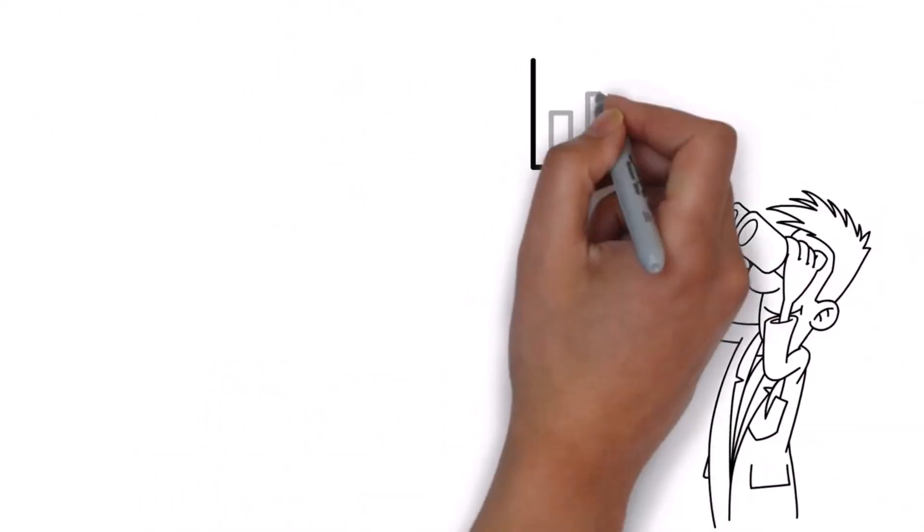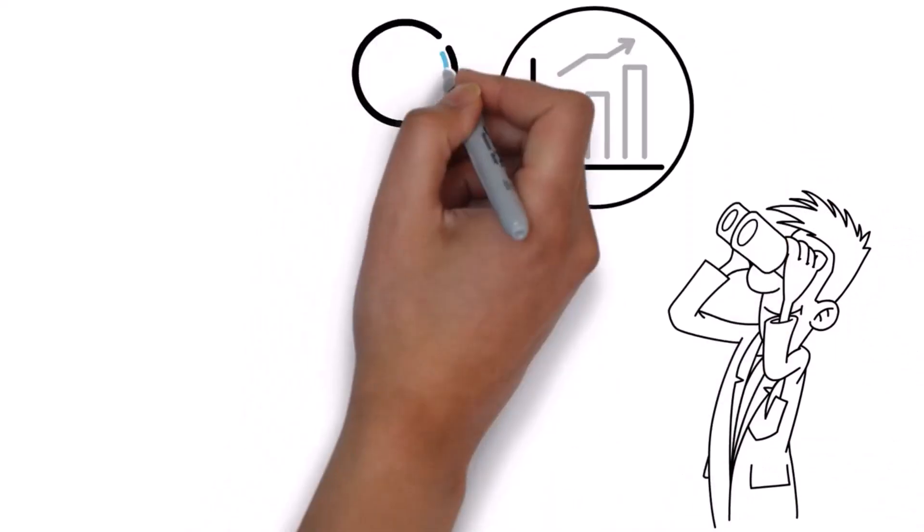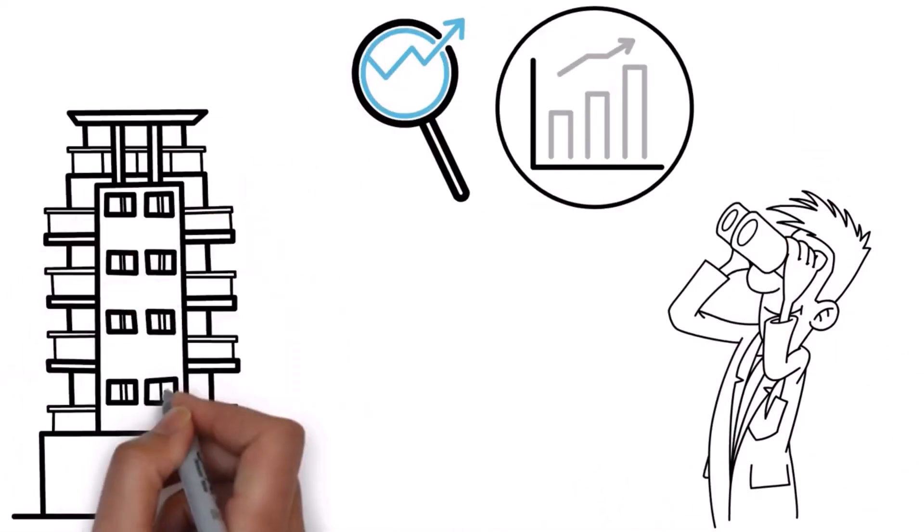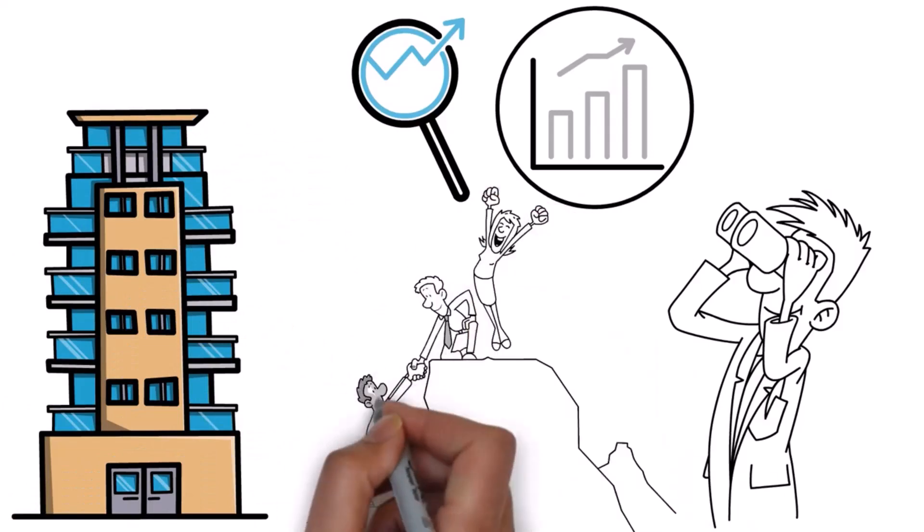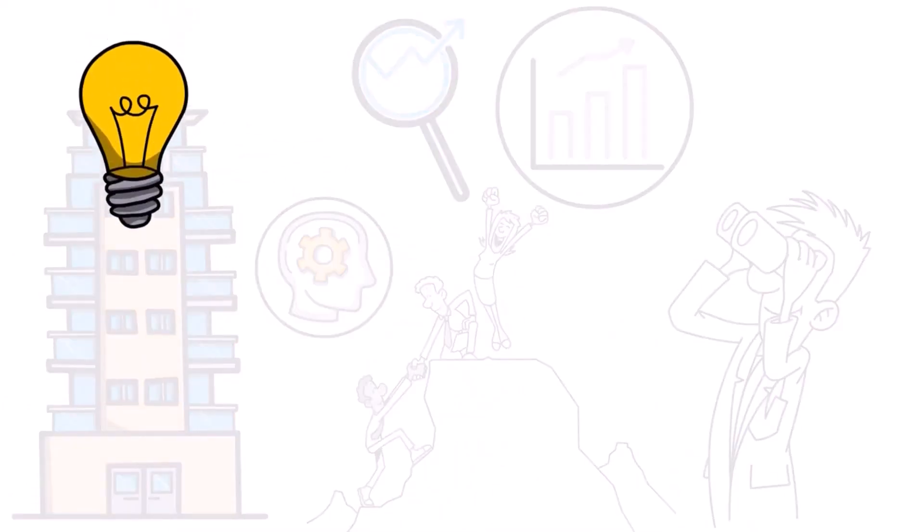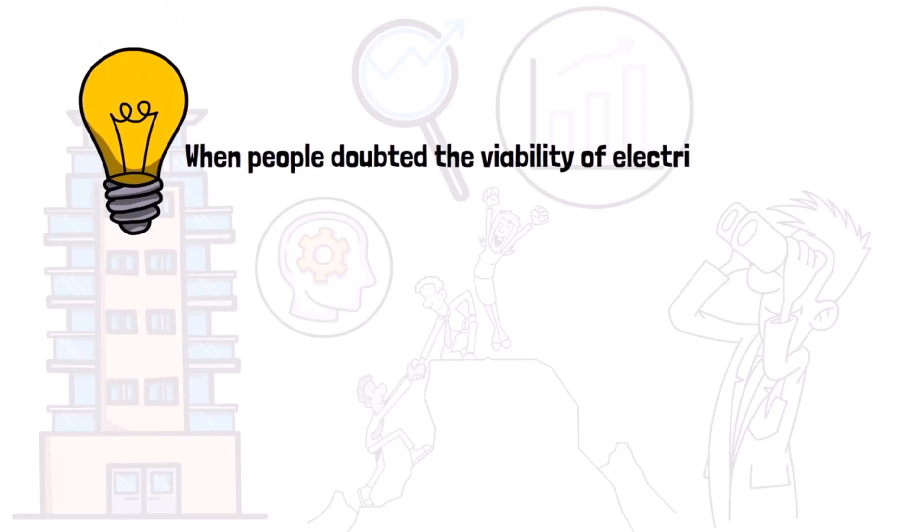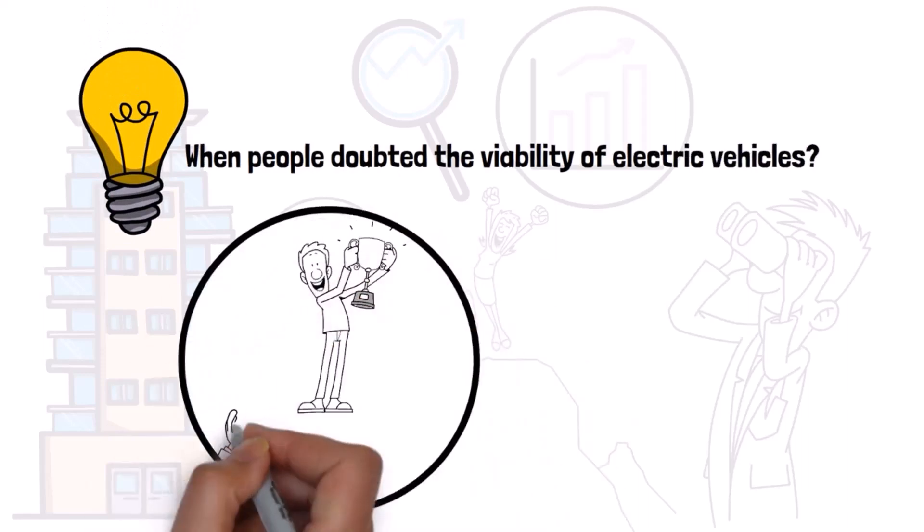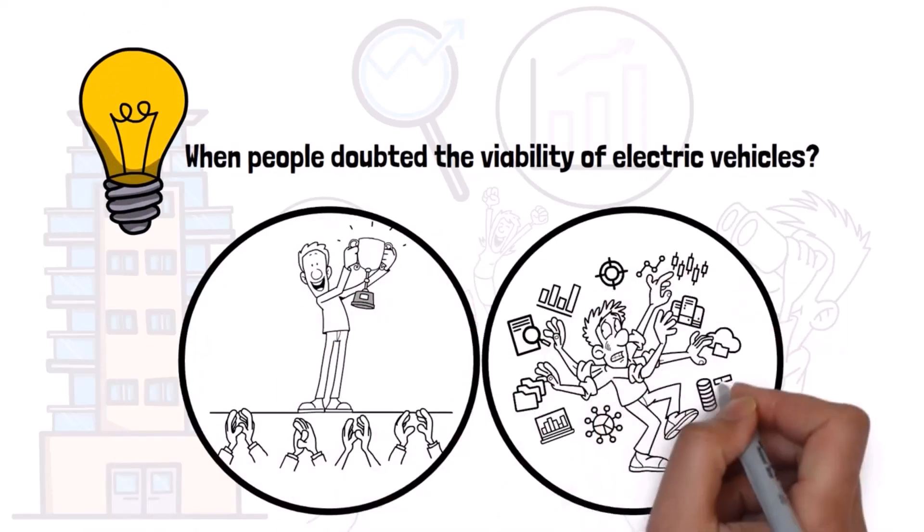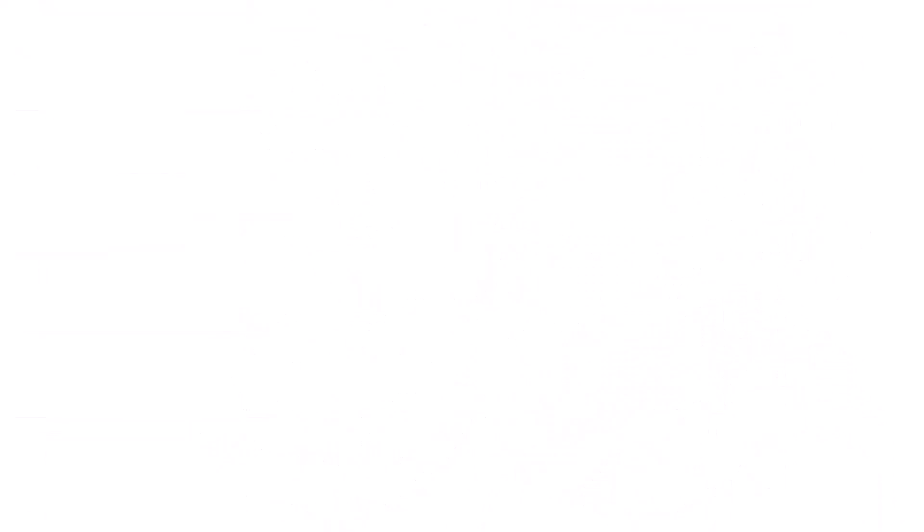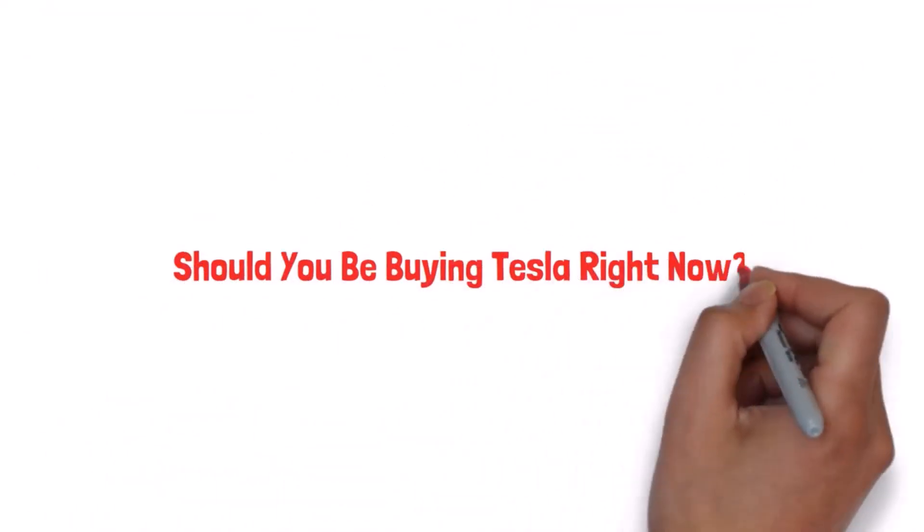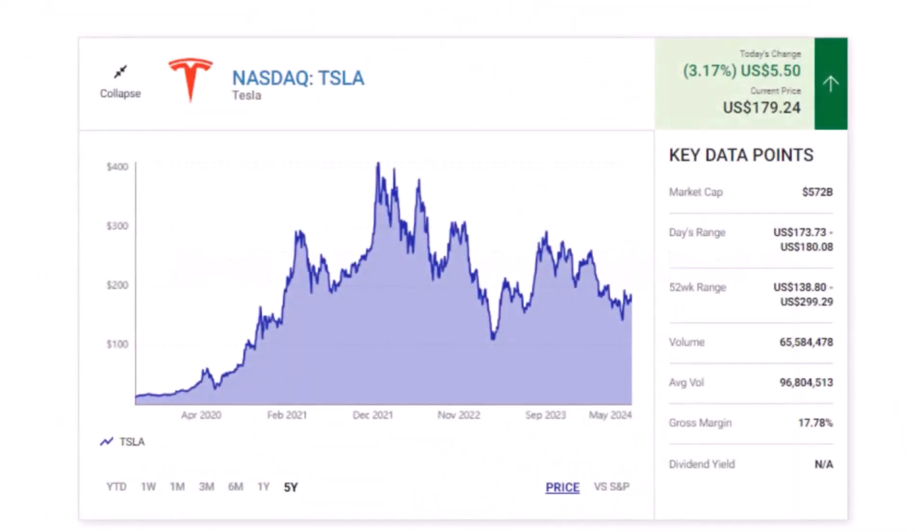Looking beyond the headlines. It's essential to look beyond the headlines and focus on Tesla's core strengths. The company has a history of overcoming challenges and surprising skeptics. Remember when people doubted the viability of electric vehicles? Tesla proved them wrong. The same could happen with their other ambitious projects.